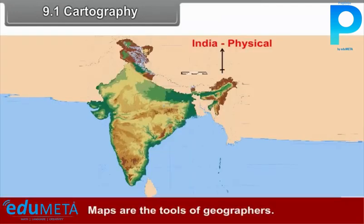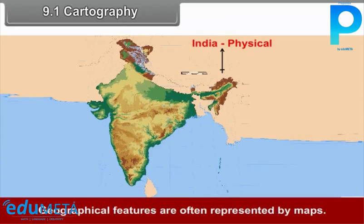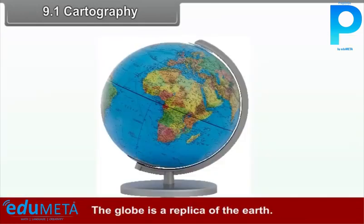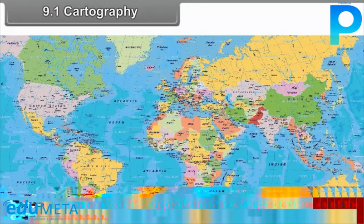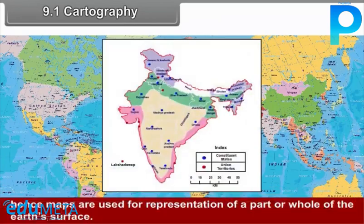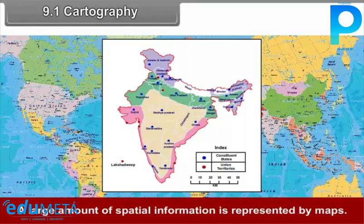9.1 Cartography. Maps are the tools of geographers. Geography can be understood well with the help of maps. Geographical features are often represented by maps. The globe is a replica of the Earth, but it cannot be used to show detailed information. Hence, maps are used for representation of a part or whole of the Earth's surface. Cartography is the art and science of mapping. A large amount of spatial information is represented by maps.